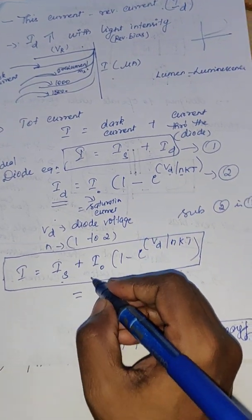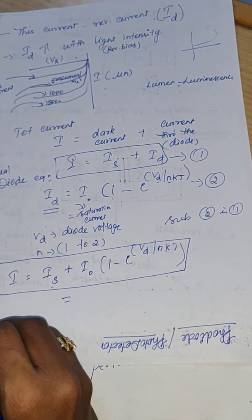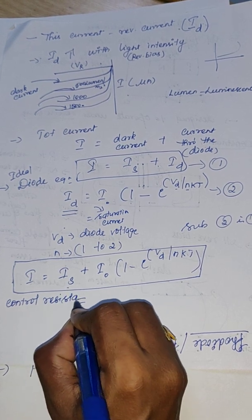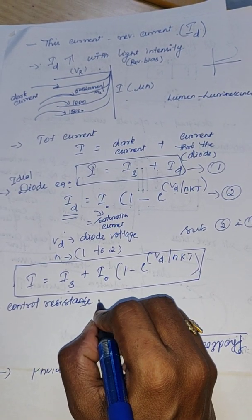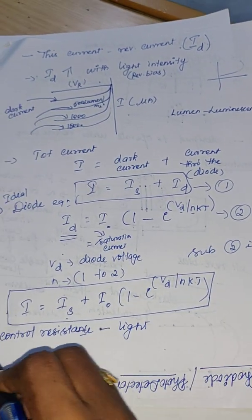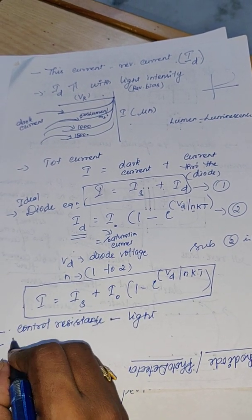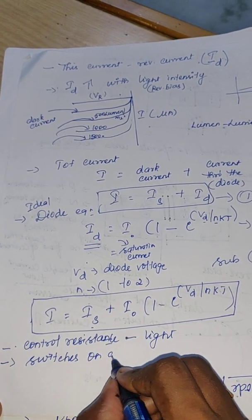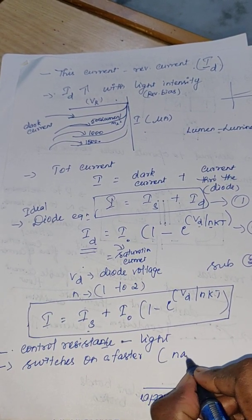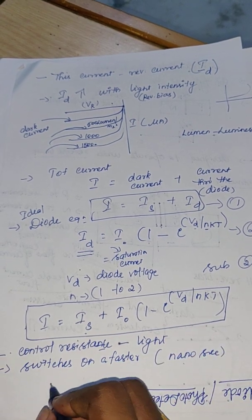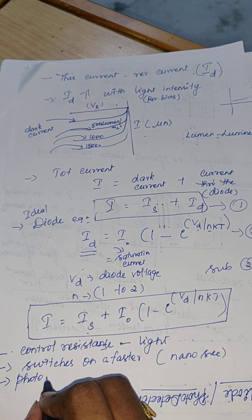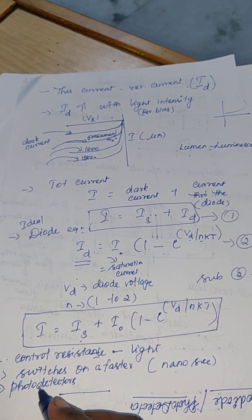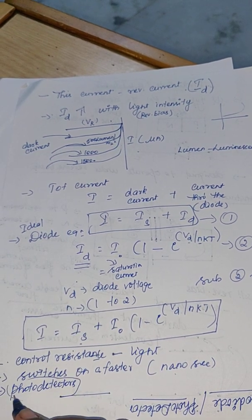The main application of a photo diode is to control resistance. The resistance is controlled by varying the current, and the current can be varied using light. Since the current can be varied, it can act as a switch. The switch can be operated at very high speed — in the nanosecond range. It can also function as a photo detector, so when a question about photo detectors is asked, you can write about the photo diode.